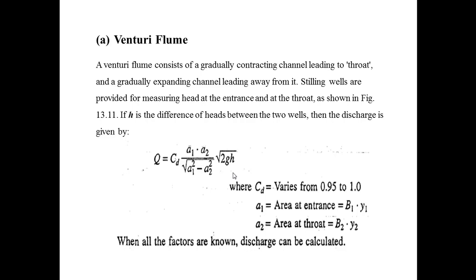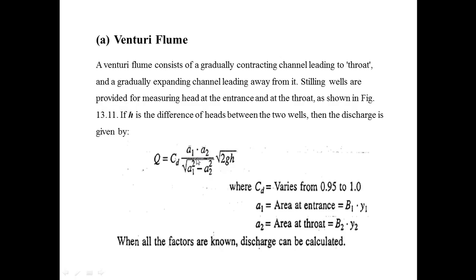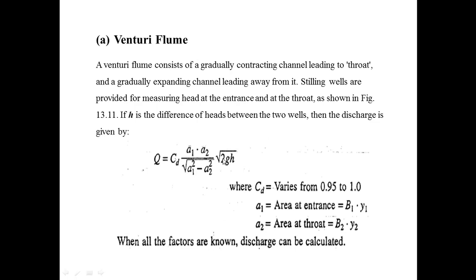If h is the difference of heads between the two wells, then the discharge is given by Q = Cd · (a₁·a₂)/√(a₁²-a₂²) · √(2gh). Here Cd is the coefficient of discharge for venturi flume and its value varies from 0.95 to 1, whereas a₁ is the area at entrance equal to b₁ × y₁, and a₂ is the area at the throat equal to b₂ × y₂. By knowing all these factors and putting them in this equation, you will get the total discharge across the channel.